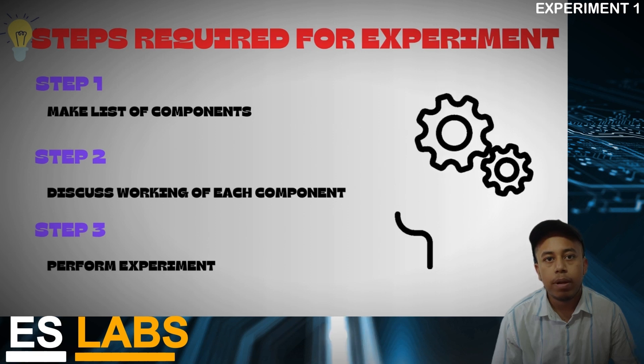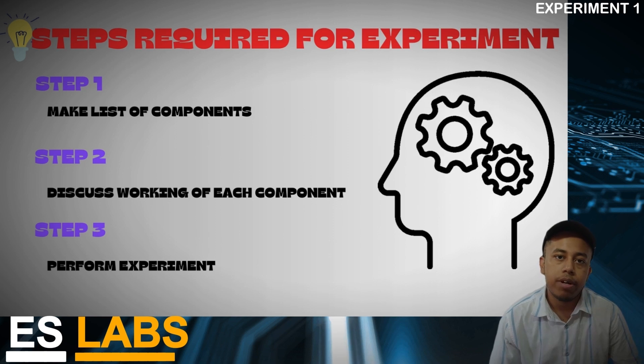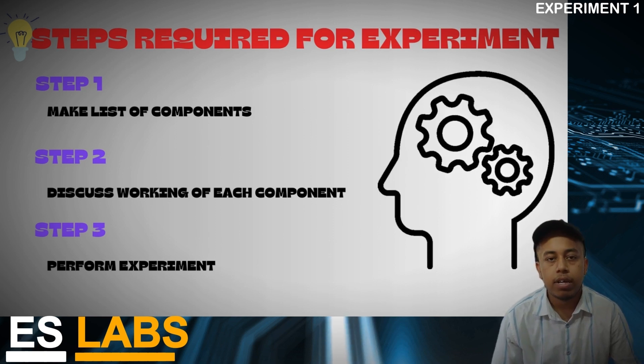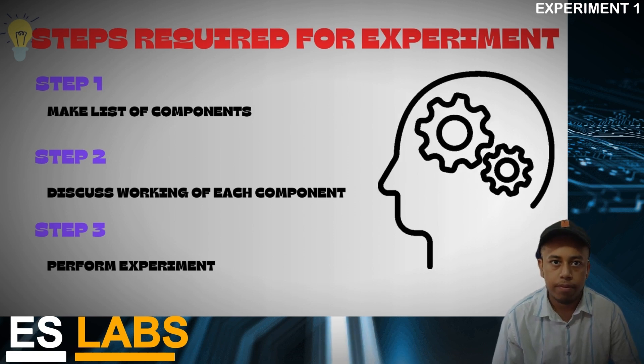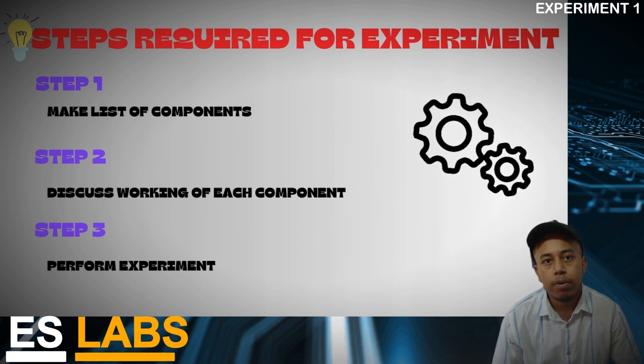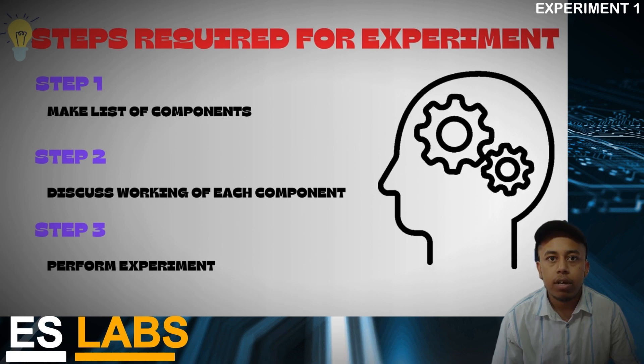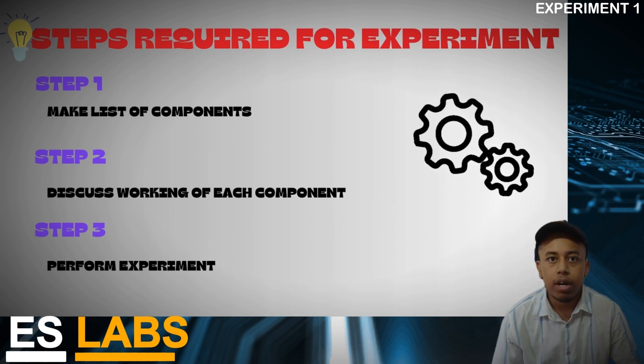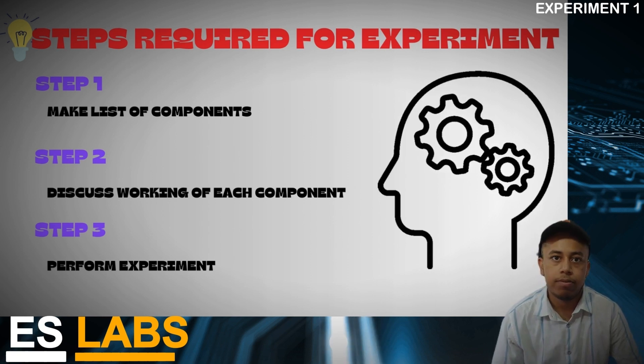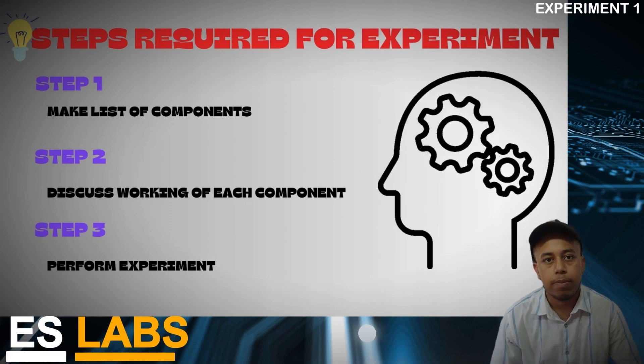I have divided this experiment into three steps. In the first step we make the list of all the components that we need for the experiment. In second step we go in detail of each of the component, how they work, how we are going to use them in our experiment. In the third step we make our circuit, take out all the elements, breadboard, voltmeter and all others, make our circuit, take the values, and plot the graph. So now let's dive into the first step.